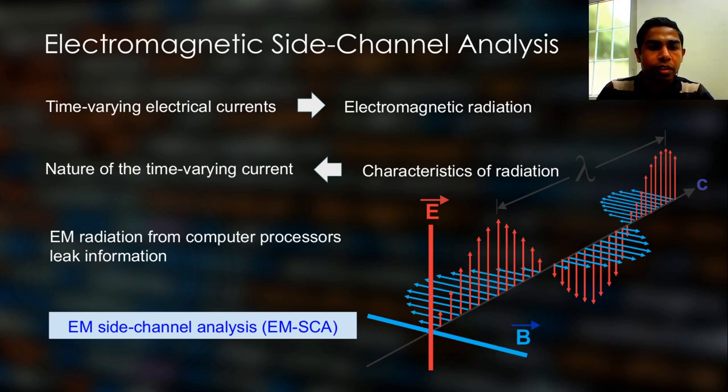Microprocessors in our computers work by manipulating electrical pulses using high-speed clocks. They generate strong electromagnetic noise and most importantly that noise leaks information about what is going inside the processor.